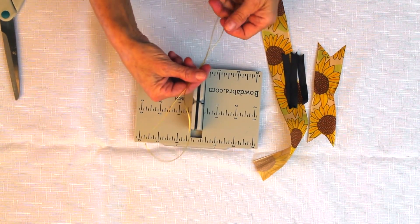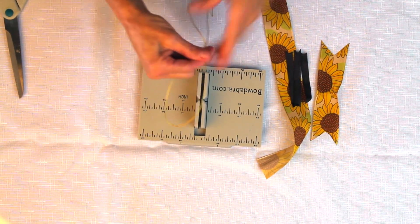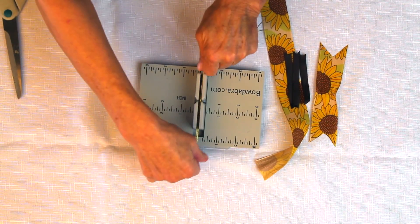Then I'm going to take my Bow Dabra bow wire, fold it in half, and lay that down into my Mini Bow Dabra.